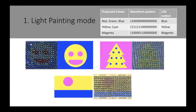We can then program the robots to emit any LED value based on the colors projected. For example, we told the robots that whenever they detect the color blue, they should blink red.